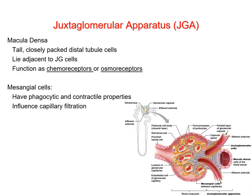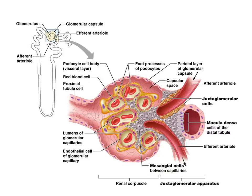The macula densa cells are in the wall of the distal convoluted tubule lying close to the juxtaglomerular cells. They act as chemoreceptors or osmoreceptors, monitoring the chemical and osmotic nature of the fluid inside the distal convoluted tubule. Fluid flows past these cells and they monitor and respond to its particular characteristics.